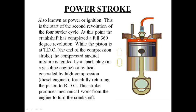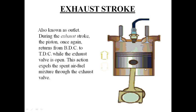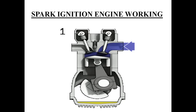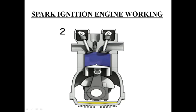When the piston reaches BDC, the exhaust valve opens and the pressure falls to slightly above atmospheric pressure at constant volume. During the exhaust stroke, the exhaust valve is open and the inlet valve remains closed. The piston moves from BDC to TDC, and the upward movement of the piston pushes the exhaust gases out through the exhaust valve into the atmosphere, after which the next cycle begins.